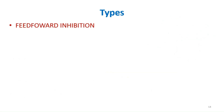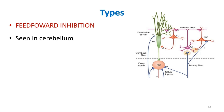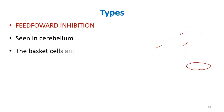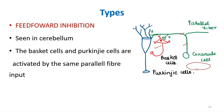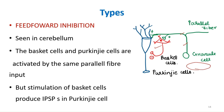Feed-forward inhibition is usually seen in the cerebellum. In the cerebellar circuit, mossy fibers activate granule cells, which are excitatory and stimulate both basket cells and Purkinje cells via parallel fibers. However, basket cells inhibit the Purkinje cell. So the same granule cell excites both the basket cell and the Purkinje cell, but the basket cell then inhibits the Purkinje cell. This results in fast excitation followed by fast inhibition, producing fine-tuning of movement.